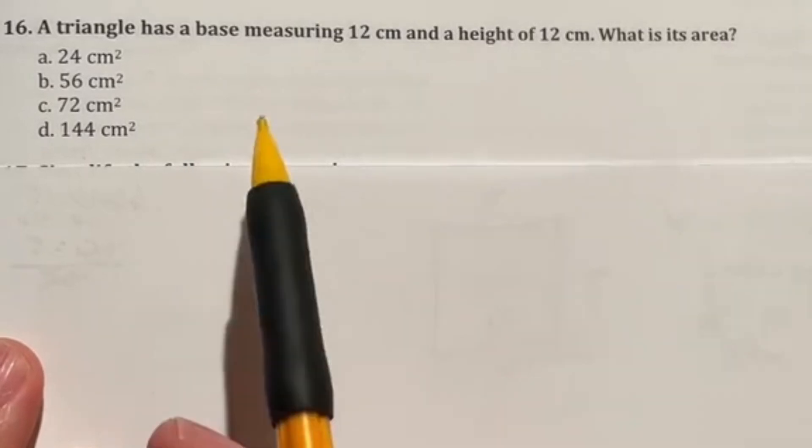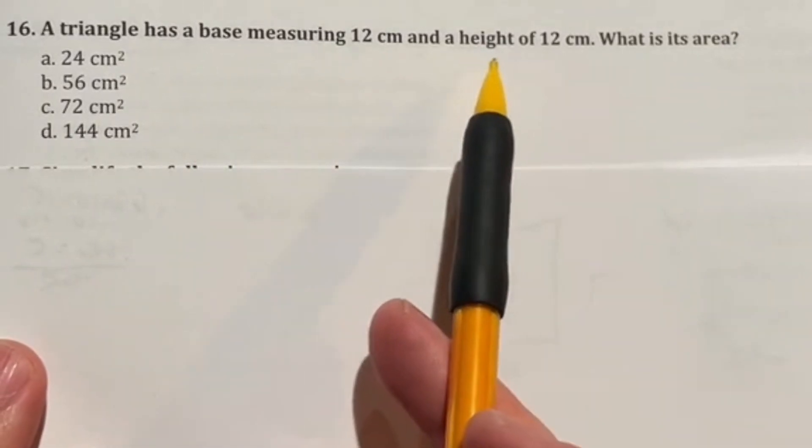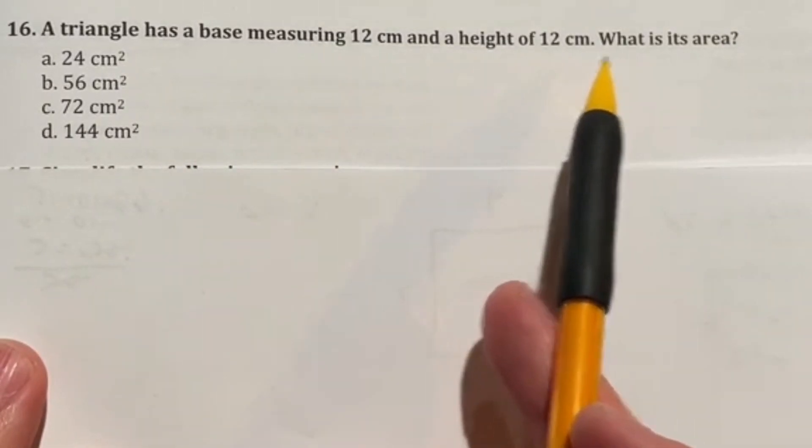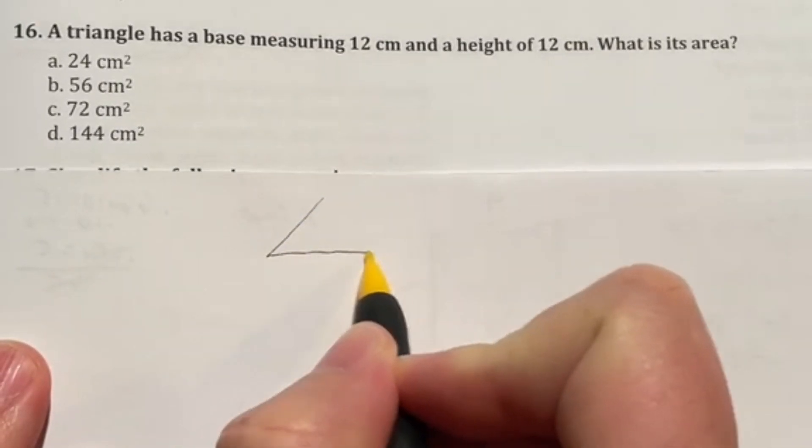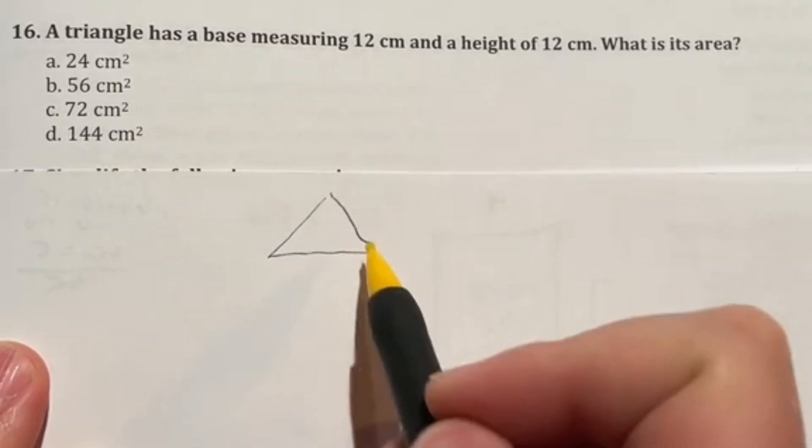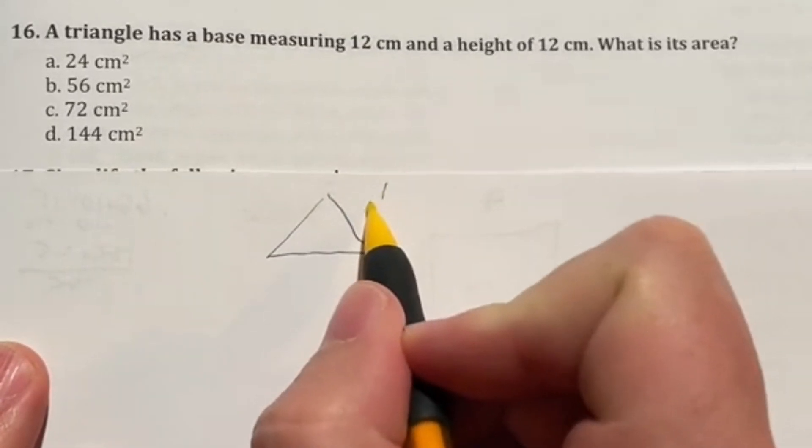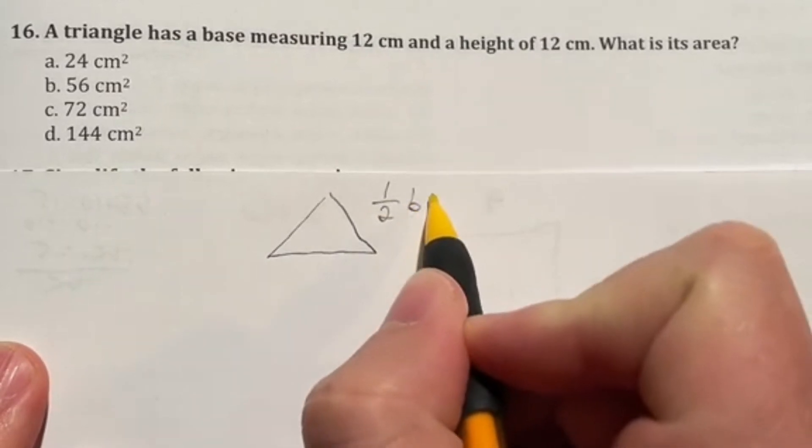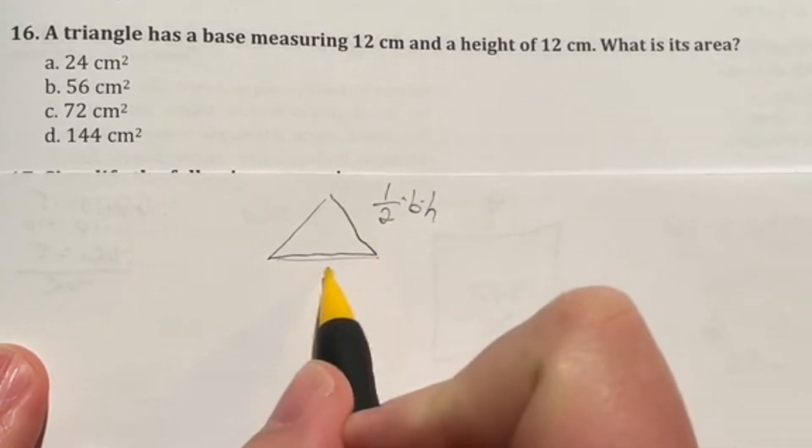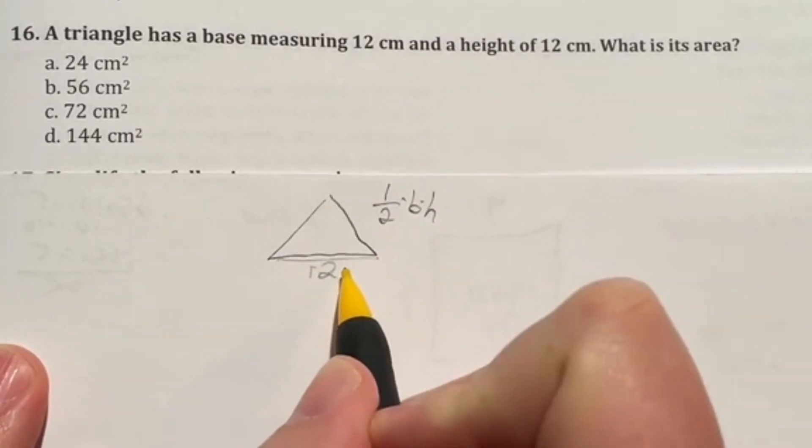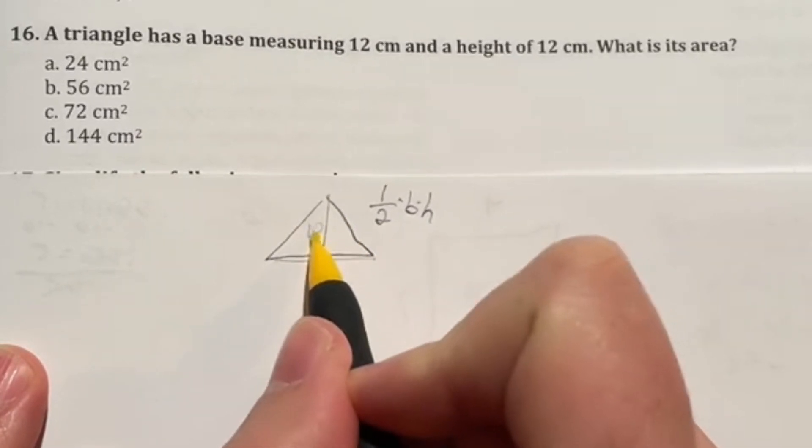Number 16 says a triangle has a base measuring 12 centimeters and a height of 12 centimeters. What is its area? So when you are looking at a triangle, the formula for area of a triangle is one half times the base times the height. In this case, they said that the base is 12 and the height was also 12.